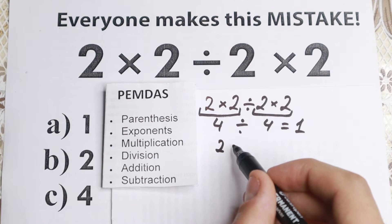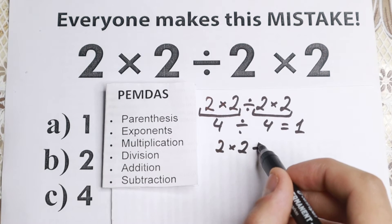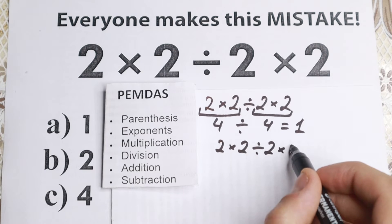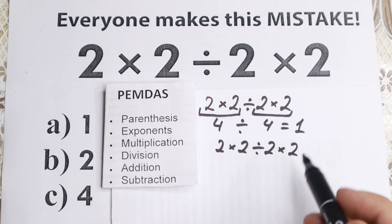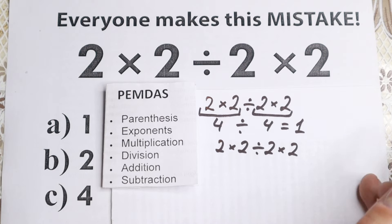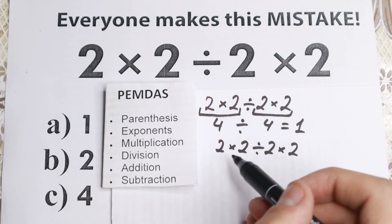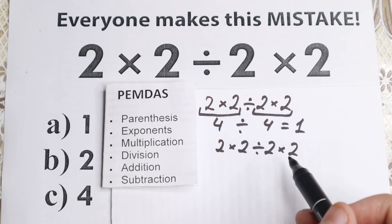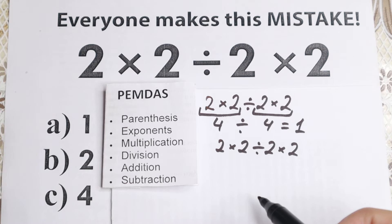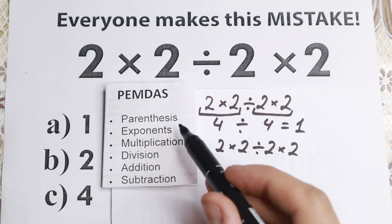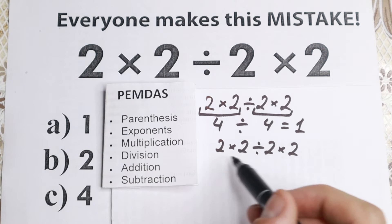So I want to rewrite this question once more. So 2 times 2 dividing by 2 and times 2. So let's work according to this order and let's check. Maybe 1 is the correct answer, but right now I don't know about it. So we have this expression. So what is the first step according to PEMDAS order?